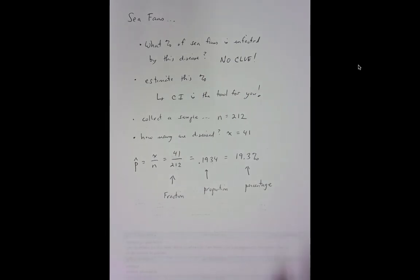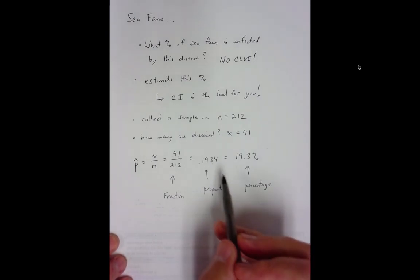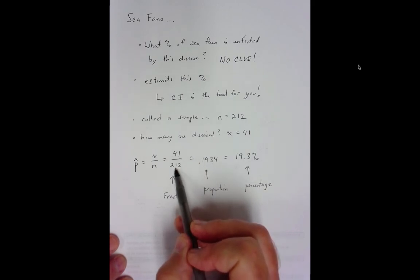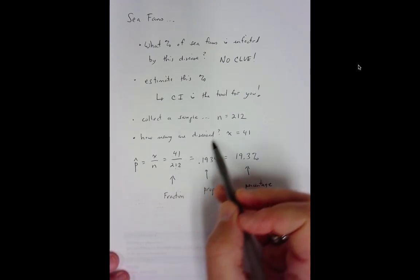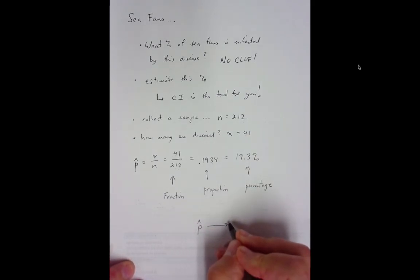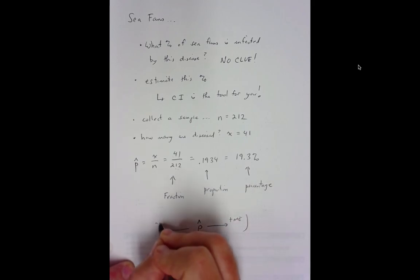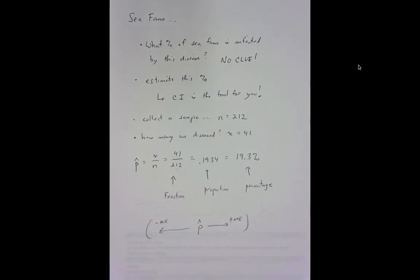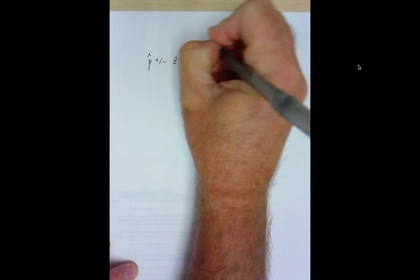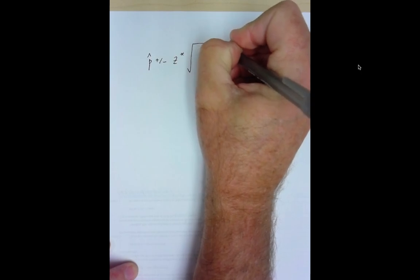We'd like to use this now to come up with an estimate. This 0.1934 is specific to this sample. If we blinked our eyes and sent down another group of divers and they got another sample of 212, this would vary. Therefore, around our p hat, we have to allow room for variation, sampling variation by what we call our margin of error. What we would have here is p hat plus or minus z star times the square root of p hat times 1 minus p hat over n. We just now have to insert the right values.